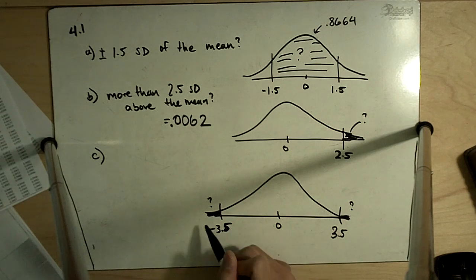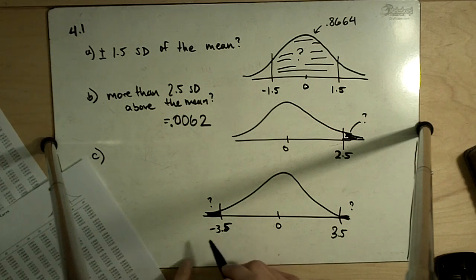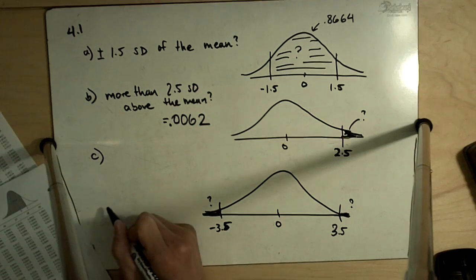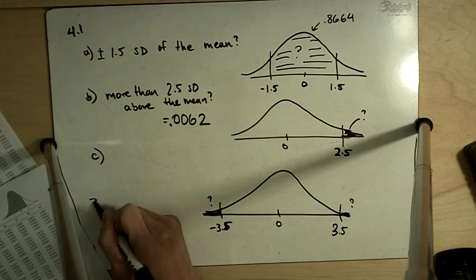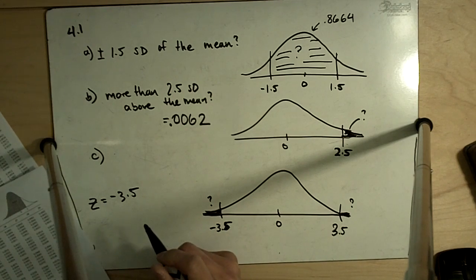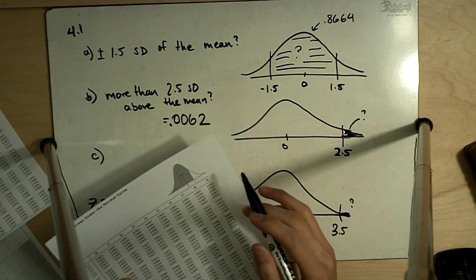There's a couple ways we can do this. One way is I can find the tail, find out the area to the left of negative 3.5. So Z is equal to minus 3.5.